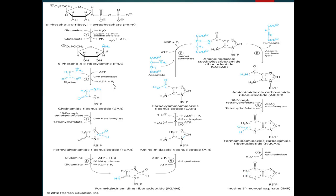After the formation of glycinamide ribonucleotide, it is converted into formylglycinamide ribonucleotide, shortly called FGAR. The enzyme for this process is GAR transformylase.